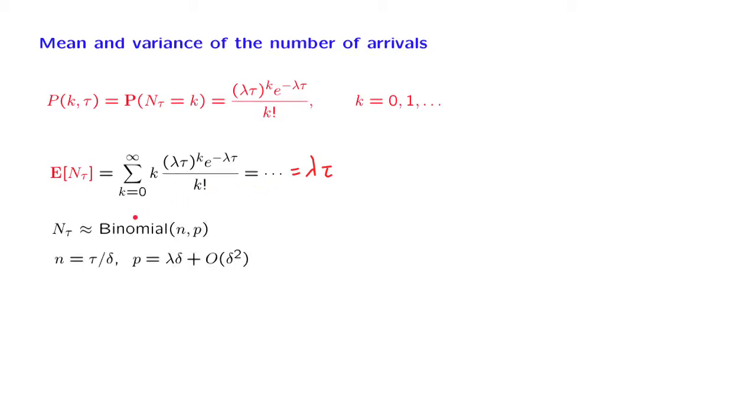Remember that the random variable, the number of arrivals in the Poisson process, is well approximated by a binomial random variable with those particular parameters n and p in the limit when delta goes to 0. And this was through a discretization argument. Therefore, the expected value of n_tau should be approximately equal to the expected value that we get from the Bernoulli process, that is, the expected value of a binomial random variable. And the expected value of a binomial random variable is n times p, and n times p evaluates approximately to lambda times tau.